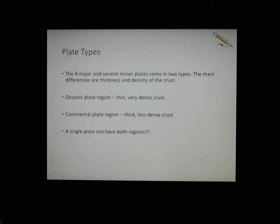We've talked about plates before and we've said there are about eight major and a few minor plates, but they come in different types — or the parts of them come in different types. The main difference is thickness and density. A plate could have some oceanic plate on it and some continental plate on it. A single plate can have both things.